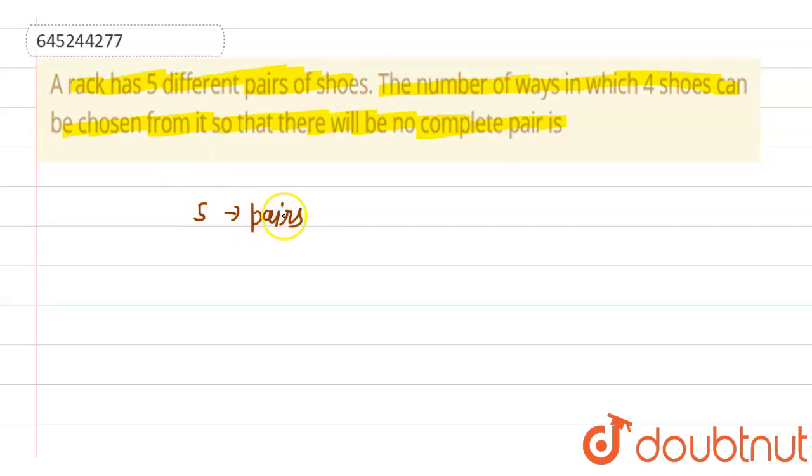So if we have five pairs and we have to choose four shoes, suppose what I can do is first of all I will choose four pairs of shoes from this. From this five pairs, I am choosing four pairs.